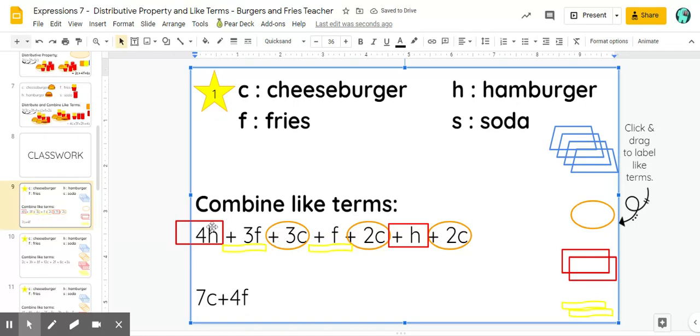And then hamburgers, I have four hamburgers, plus another hamburger, which is one more, for a total of five hamburgers. This is my final answer. I don't want to add them together because then I don't know how many of which food item to prepare.